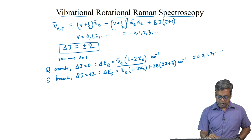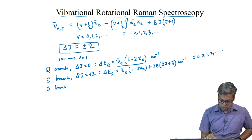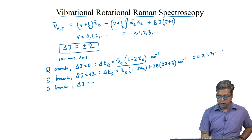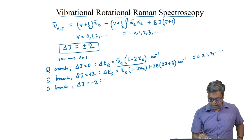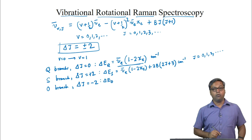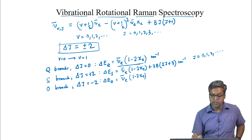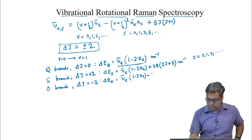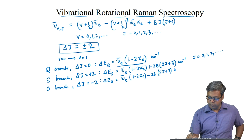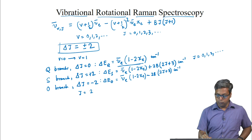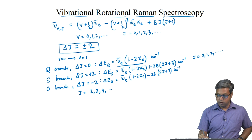We can also have the O branch, where delta J = -2. For the O branch, delta E_O equals nu-bar_E * (1 minus 2*chi_E) minus 2B * (2J+3), in wave numbers, where J = 2, 3, 4, and so on.